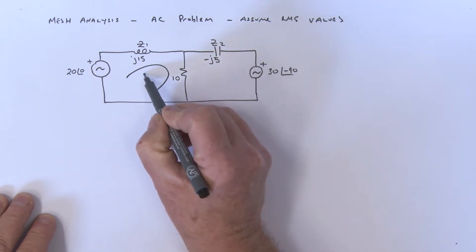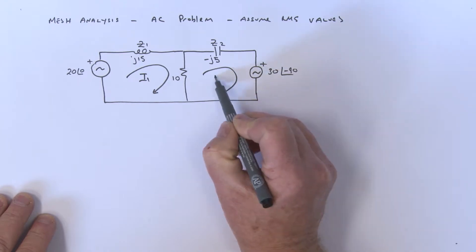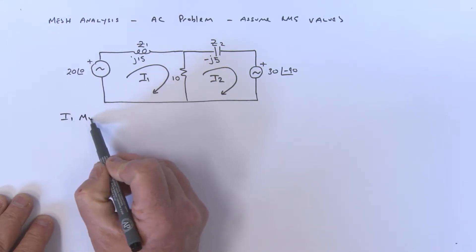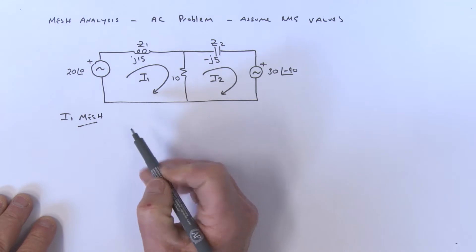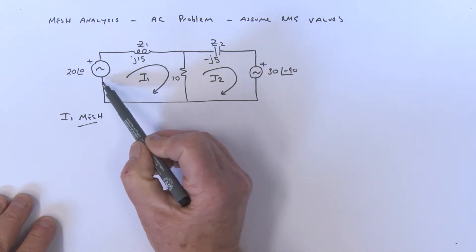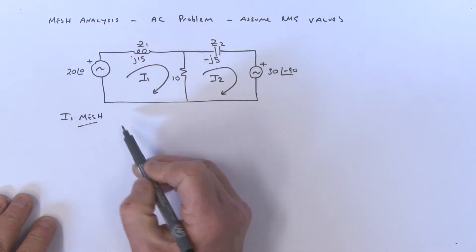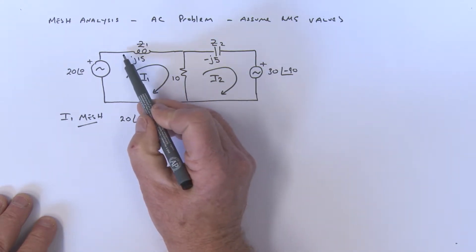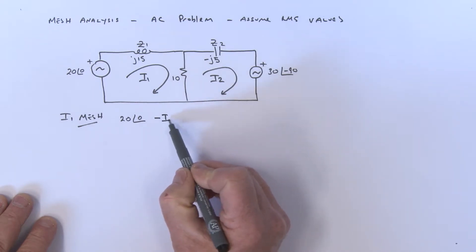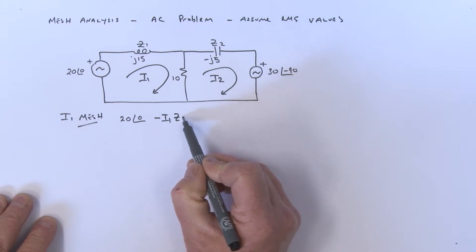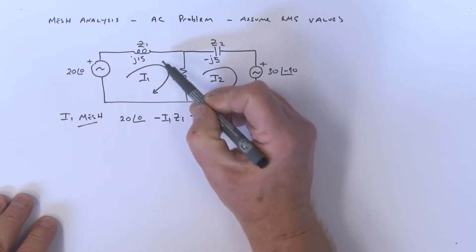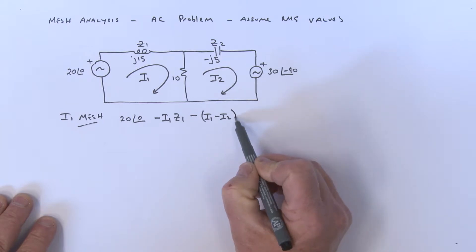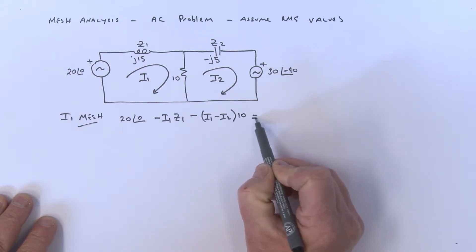Here is the I1 mesh current and here is the I2 mesh current. For the I1 mesh, we're going to travel around in the direction of the mesh current. Starting here, going up, we have 20 at angle zero, then a minus I1 times Z1, and then a minus bracket I1 minus I2 times 10, and all of that is equal to zero.